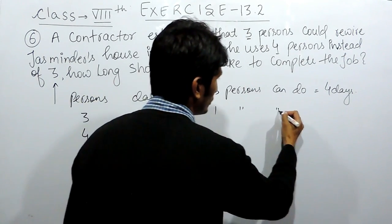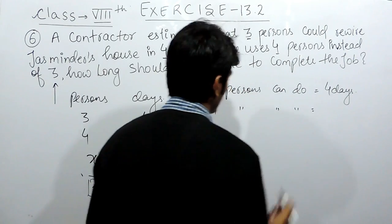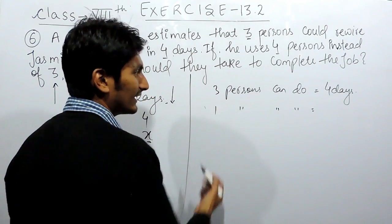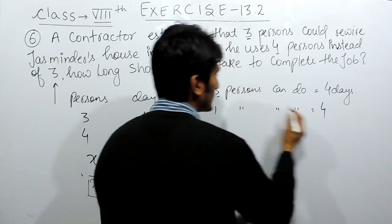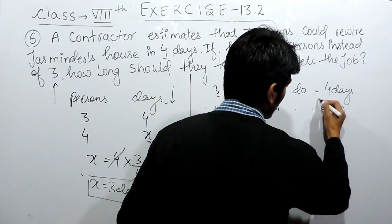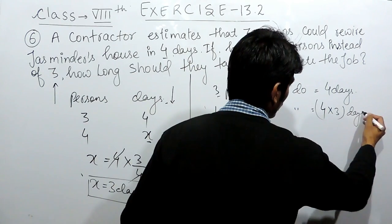The 1 person can do the same piece of work. So obviously, because the number of persons are decreasing, obviously days must increase. So to increase this, I have to multiply this with 3. So this will be 4 into 3 days.